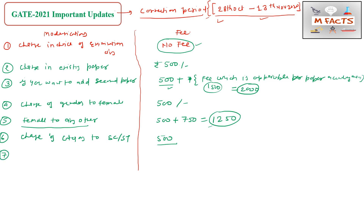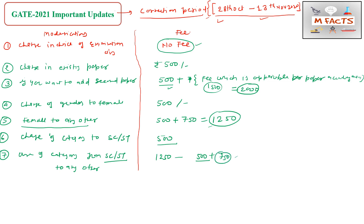The next change is also related to category. If you want to change your category from SC/ST to any other category — for example from SC/ST to General or OBC — you need to pay 1250 rupees. That is 500 rupees for the correction plus 750 rupees charged for the category change.